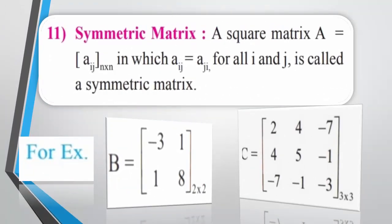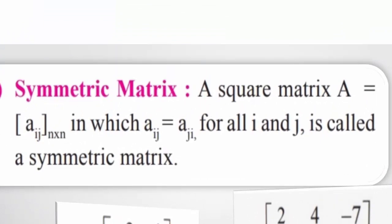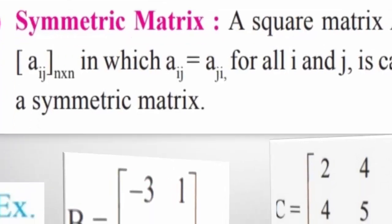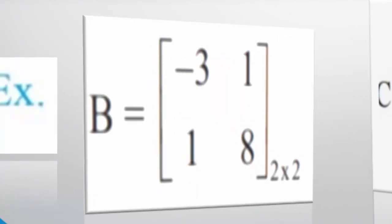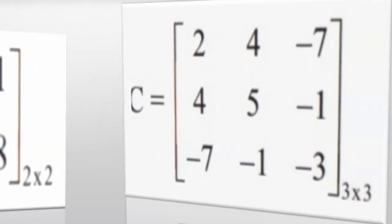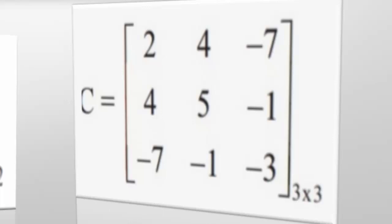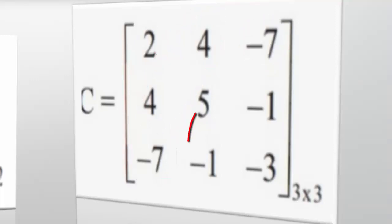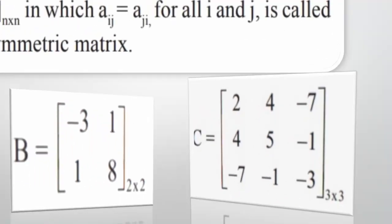Symmetric Matrix: A square matrix A with elements Aij of order m by n in which Aij equals Aji for all i and j, and at least one diagonal element is non-zero, is called a symmetric matrix. For example, matrix B of order 2 by 2 has A12 equal to A21, which equals 1. Matrix C of order 3 by 3 has A12 equal to A21, A13 equal to A31, and A23 equal to A32 — these are examples of symmetric matrices.